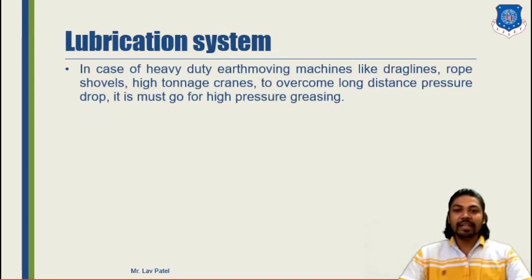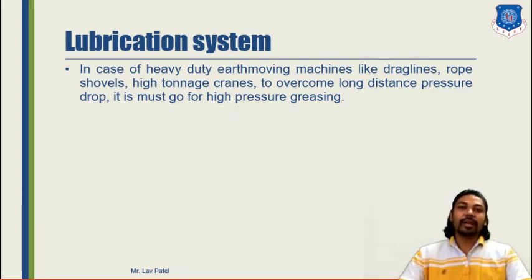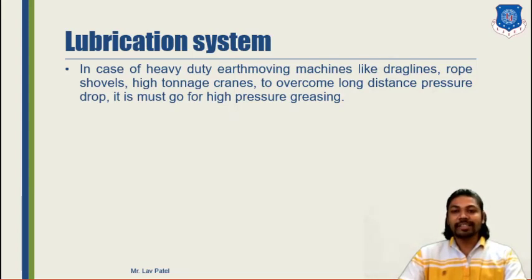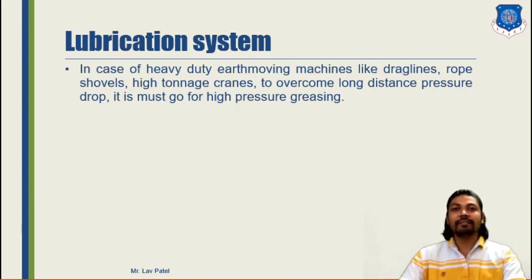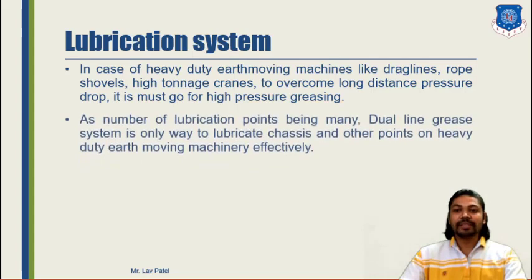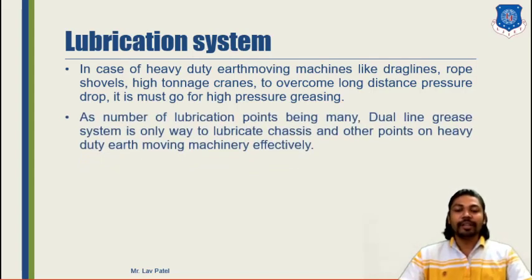In case of heavy-duty earth-moving machines like bulldozers, draglines, rope shovels, and high tonnage cranes, we need a lubrication system that can overcome friction at each and every point. We also need to consider long-distance pressure drop because very large machines are involved. For that, we need some kind of pump to transport grease or oil from one place to another for lubrication purposes. As the number of lubrication points may increase, we use a dual-line grease system.